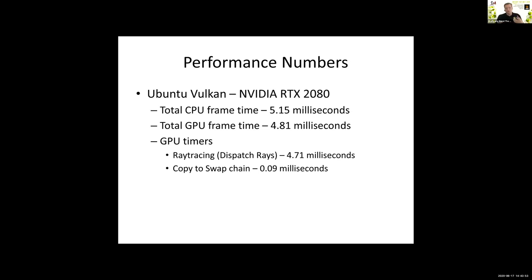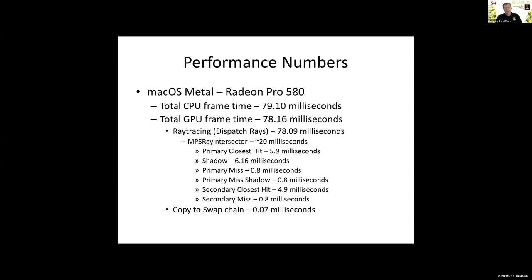We have an iMac in the office with a Radeon Pro 580, and it was about 78 milliseconds. A much more modern AMD GPU would speed that up substantially. The point of a path tracer is obviously not like a game, so these are all great numbers already. If you do tools — for example, to pre-bake light maps — this is a setup that is already pretty quick on most hardware for doing that.